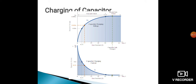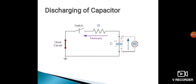A practical example: if we keep our mobile phone in charging condition, till 99% of charging it will show the charging symbol in the battery on your phone. As soon as the battery reaches 100%, that charging symbol will get cut off, because the current flowing in the circuit will become zero. Now we will see the discharging of the capacitor.